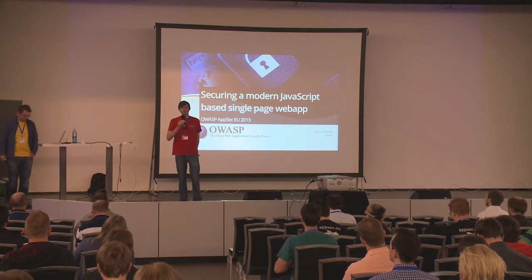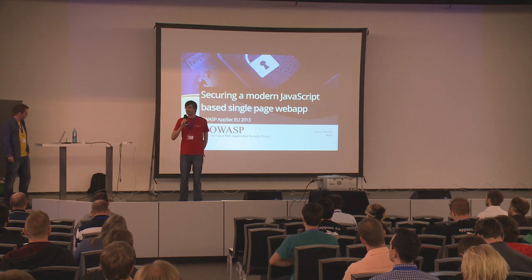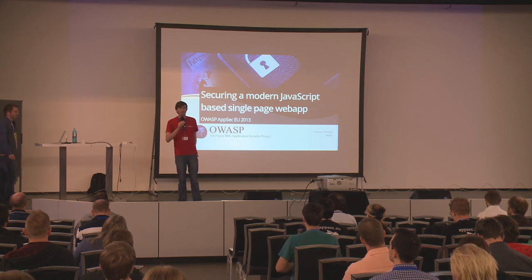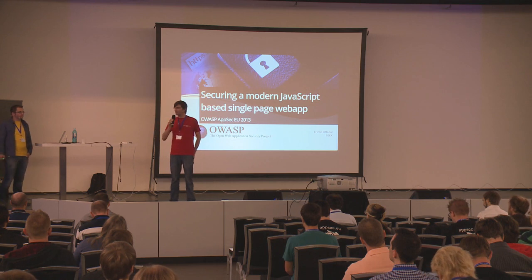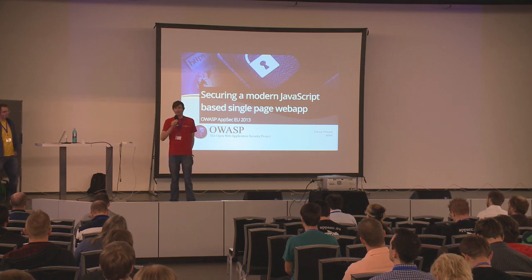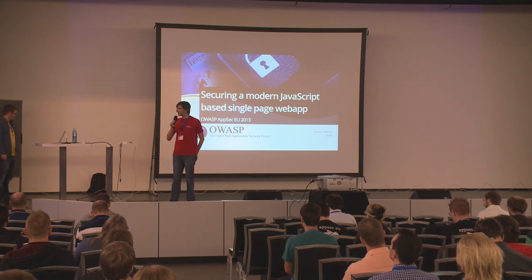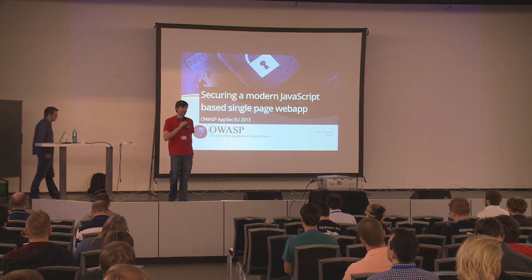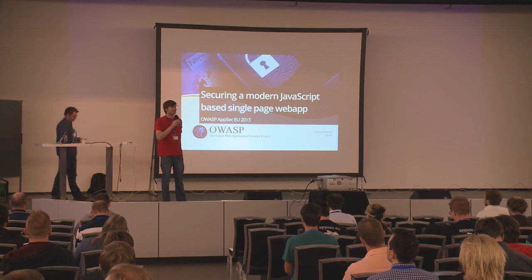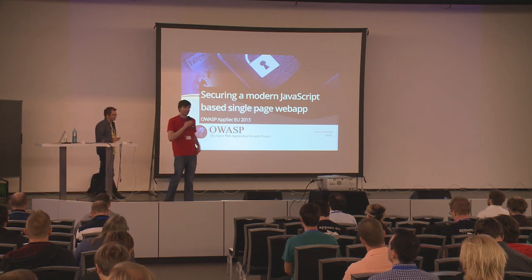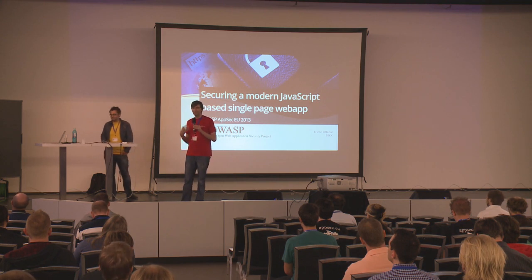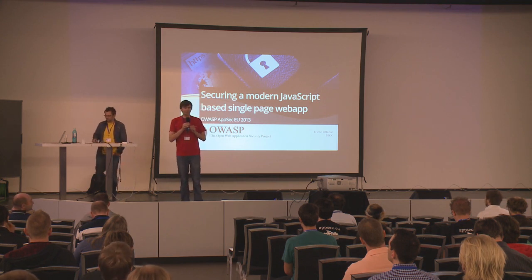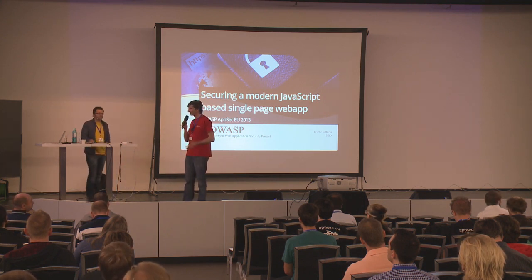This is Elendor, he's chapter lead of OWASP chapter Norway. He's mostly a developer with a focus on security, so he's part of the OWASP builders, and this is something very close to my heart because I think they are the unsung heroes of application security — because breaking is easy, making stuff secure is much harder. Therefore, Elendor will tell us how to do this.